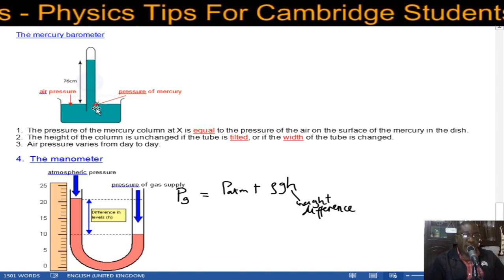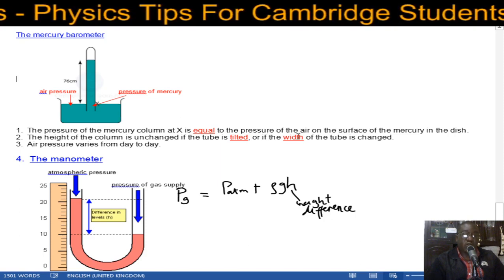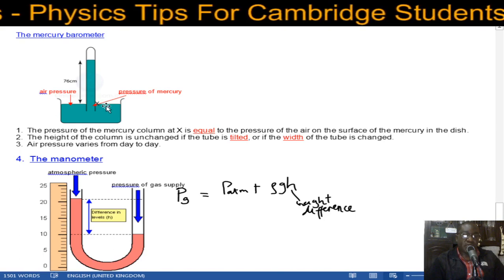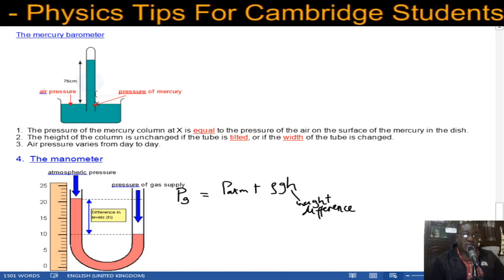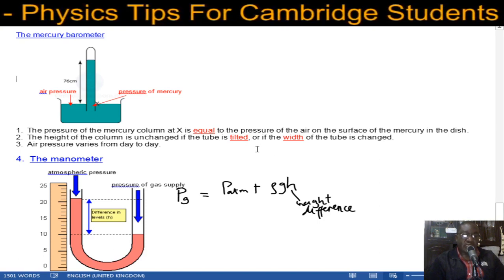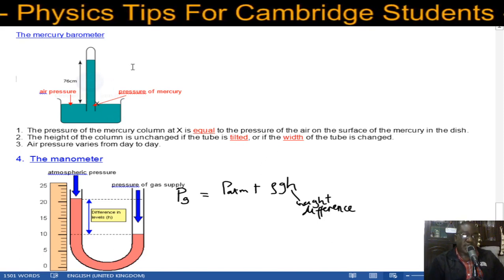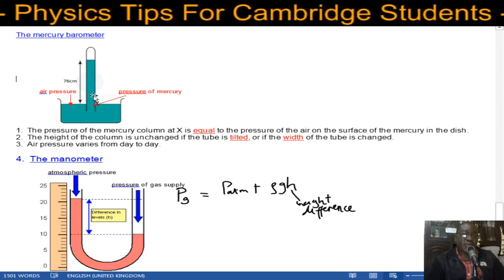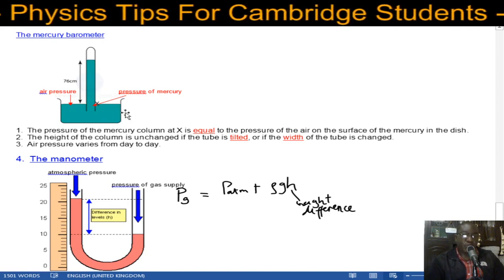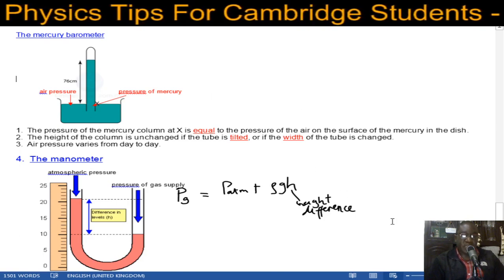Now consider this point here, x. The pressure of mercury at x is equal to the pressure of the air on the surface of the mercury in the dish. The pressure here is the same as the pressure there at that depth. The height of the column is unchanged if the tube is tilted or if the width is changed. Air pressure varies from day to day.